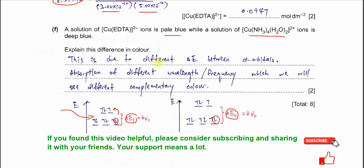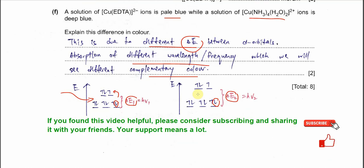This is the answer for the mark scheme. The color difference is due to different delta E values between the d orbitals in each complex ion. Since delta E is different, they absorb different wavelengths and frequencies, and we observe different complementary colors. I hope you understand — thank you.